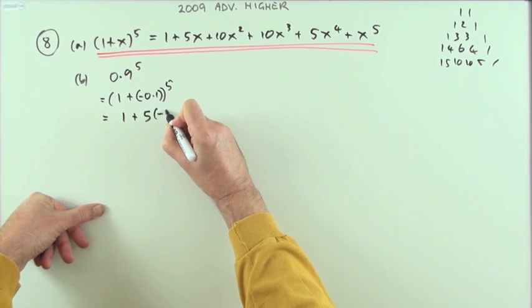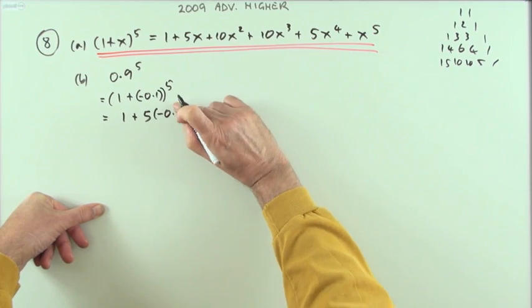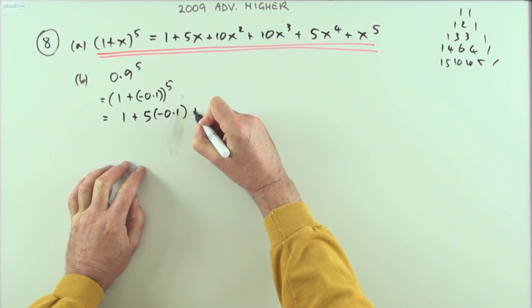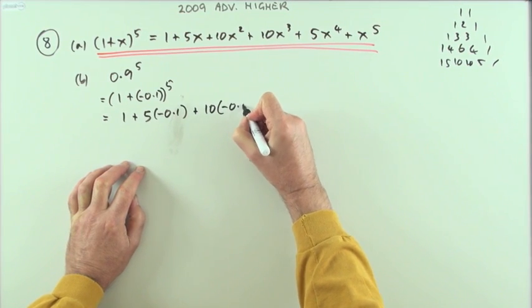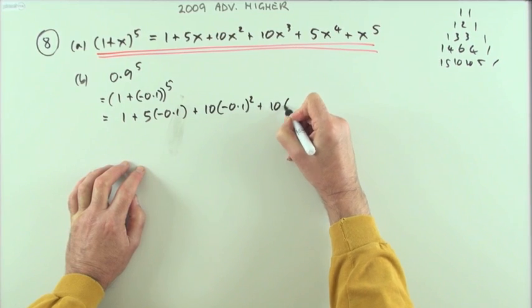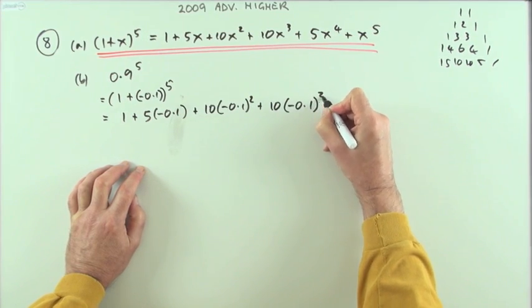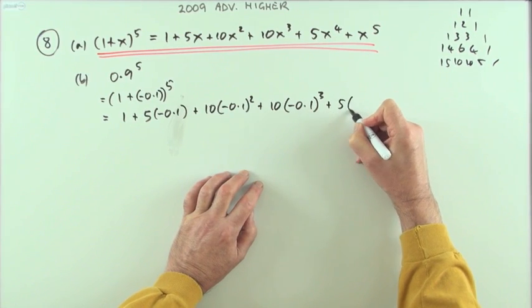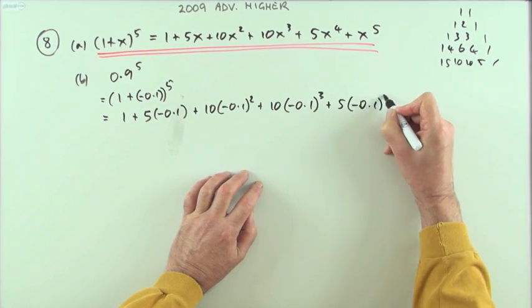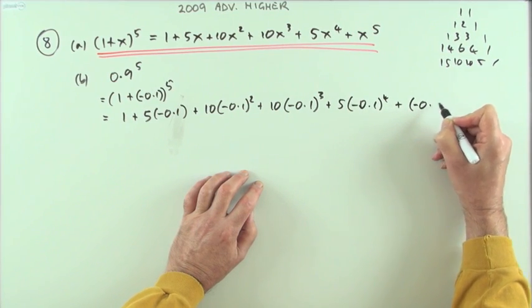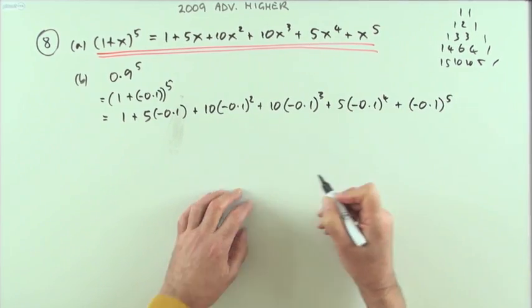There's a real paste for just two marks. So I've got 1 plus - it'll be 5 times, I'll just put the substitution in first of all - negative 0.1 plus 10 times negative 0.1 squared plus 10 times negative 0.1 cubed plus 5 times negative 0.1 to the power 4 plus negative 0.1 to the power 5.